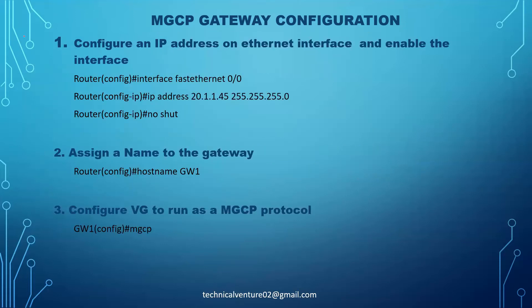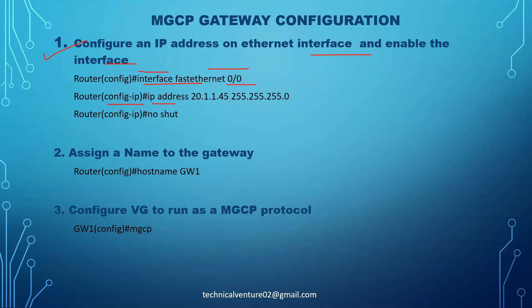The first step is to configure an IP address on the Ethernet interface and enable the interface. You need to go to that particular interface — in this case, interface FastEthernet 0/0. Then assign the IP address: we entered the command 'ip address 20.1.1.2 255.255.255.0'. This gives the IP address to this particular Ethernet interface. Then we need to enable the interface by using the command 'no shutdown'.